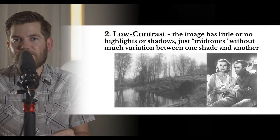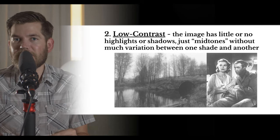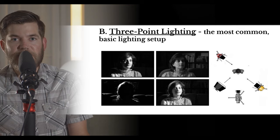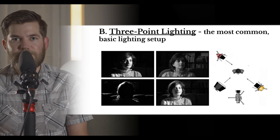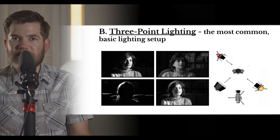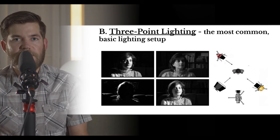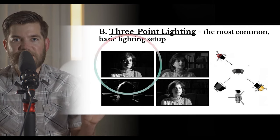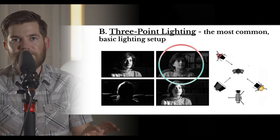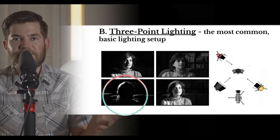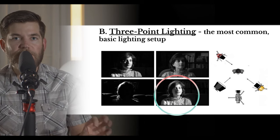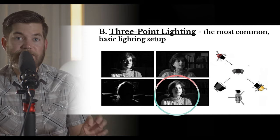Next we have three-point lighting, the most common lighting setup. You have one light in the top left, another in the top right, and one in the bottom left. When you combine them all, you get the result where all three lights are on at the same time. In the diagram, the light in the back can be angled, and the two lights in front are both angled in towards the subject with the camera in between them.